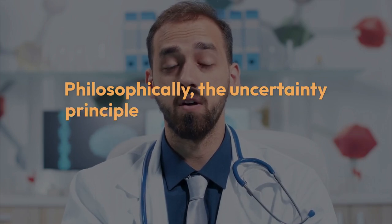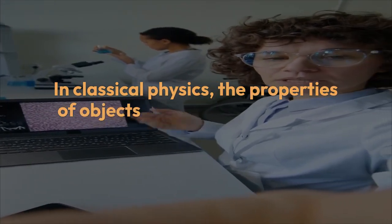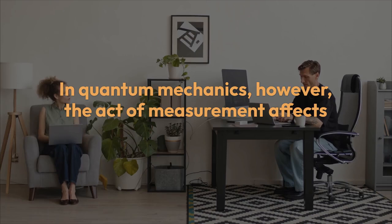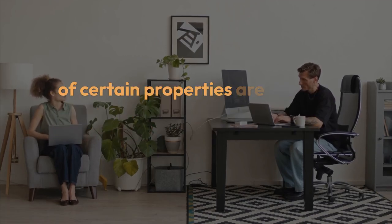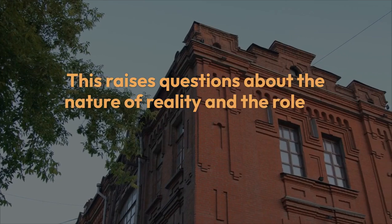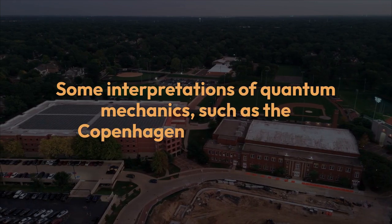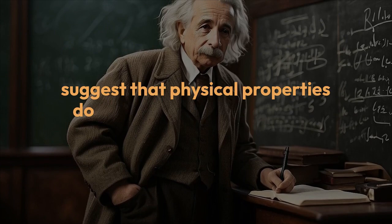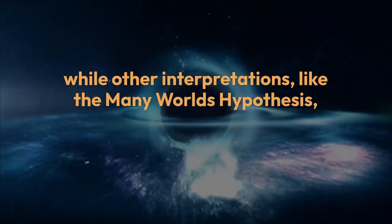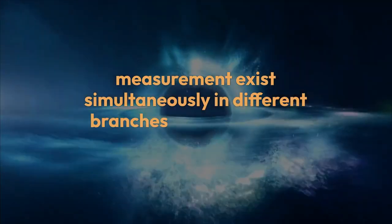Philosophically, the uncertainty principle challenges traditional notions of reality. In classical physics, the properties of objects are considered to exist independently of observation. In quantum mechanics, however, the act of measurement affects the system, and the precise values of certain properties are not well-defined until they are measured. This raises questions about the nature of reality and the role of the observer in the quantum world. Some interpretations of quantum mechanics, such as the Copenhagen interpretation, suggest that physical properties do not exist in a definite state until they are observed, while other interpretations, like the many-worlds hypothesis, propose that all possible outcomes of a quantum measurement exist simultaneously in different branches of the universe.